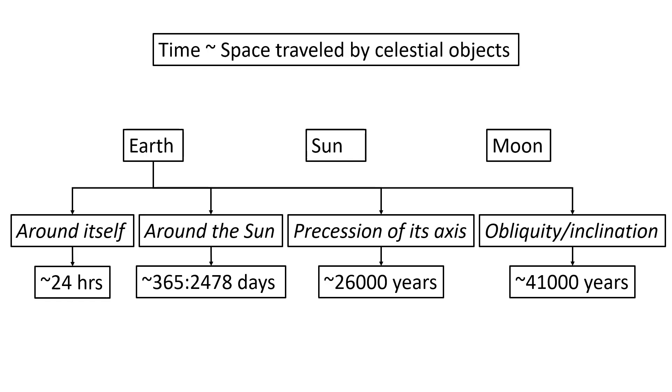Again, as I said, for most part, we are going to focus on the first two motions of the Earth around itself, that is in 24 hours, around the Sun in about 365 days, which is same as the duration of one solar year.